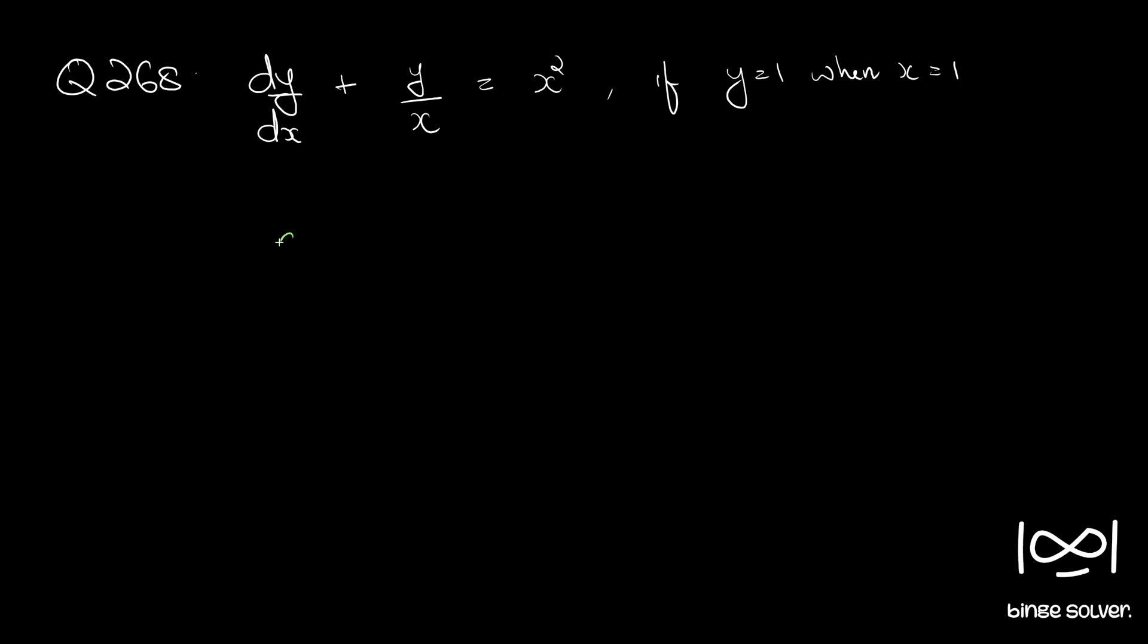So the given equation is in the standard form of a linear differential equation. Standard form being dy by dx plus py equal to q, where p and q are either constants or functions of x alone. Here p is equal to 1 by x and q is equal to x square, both functions of x alone.